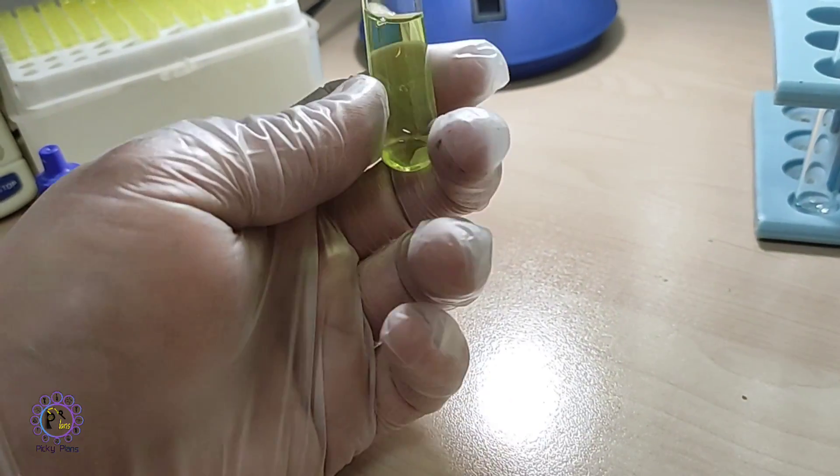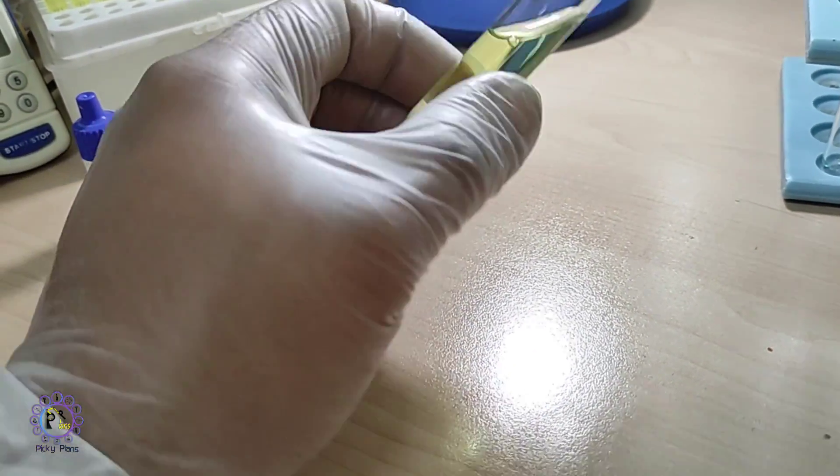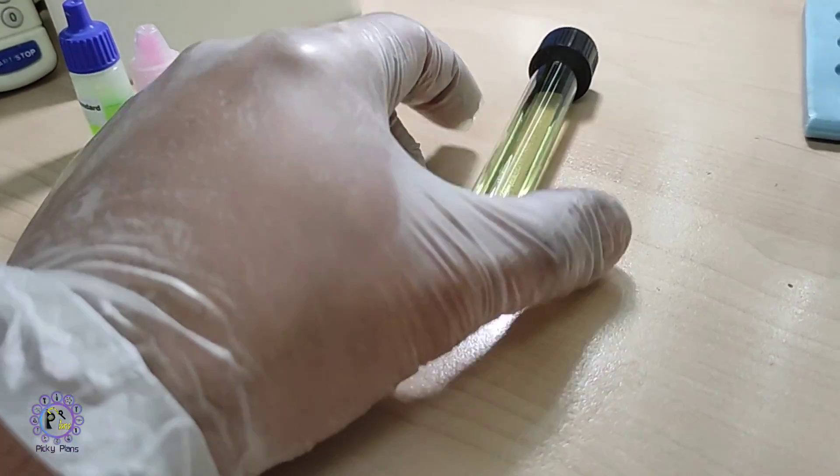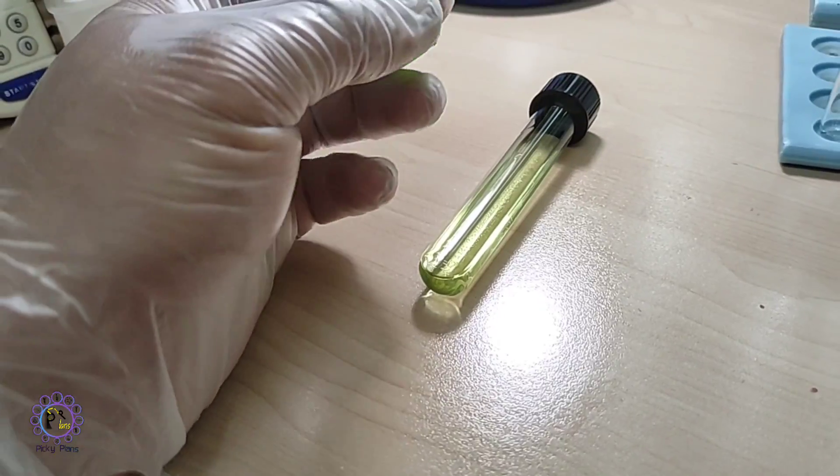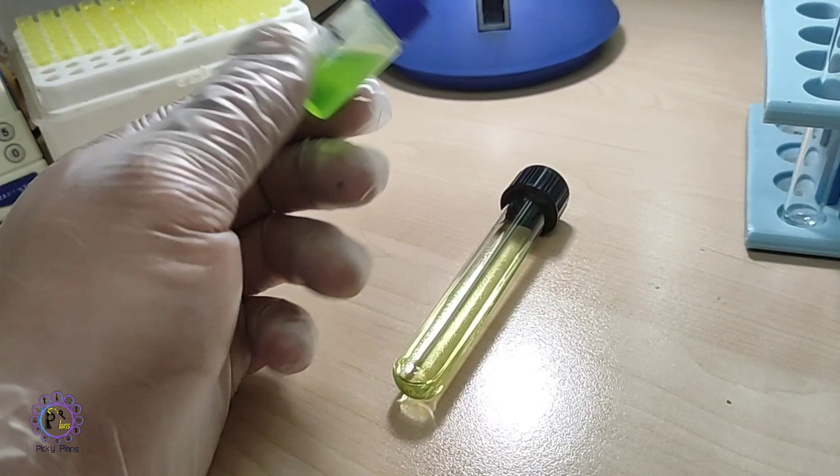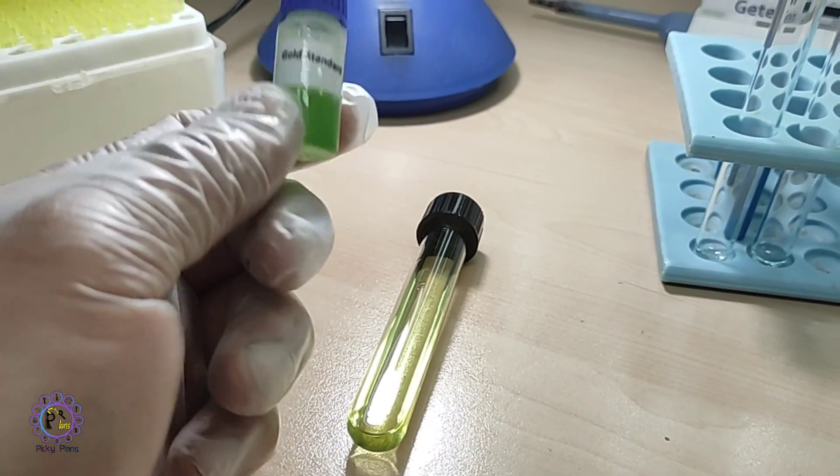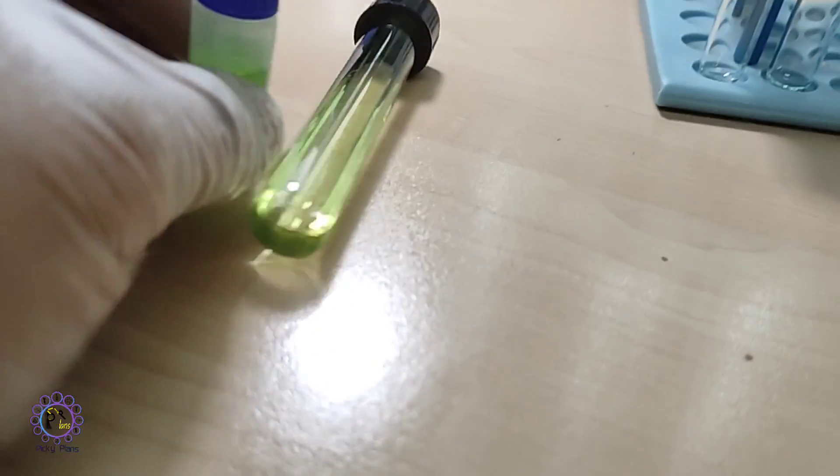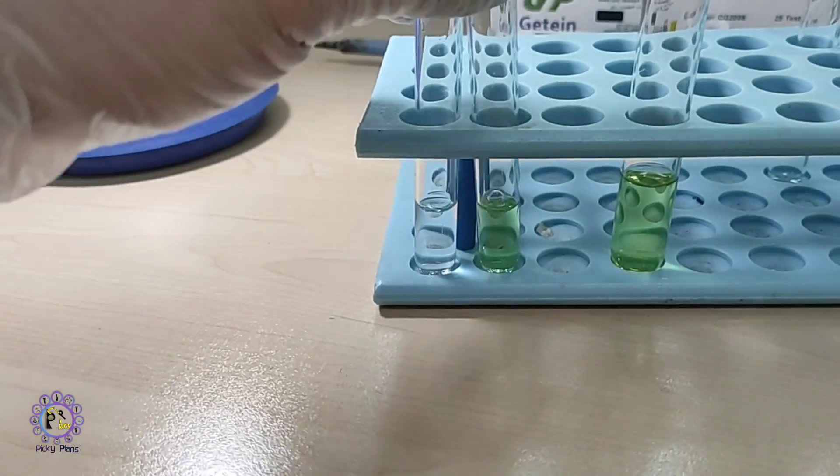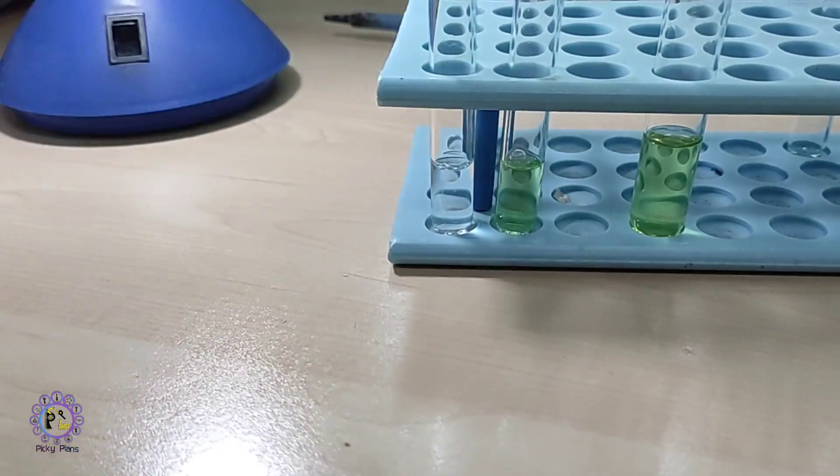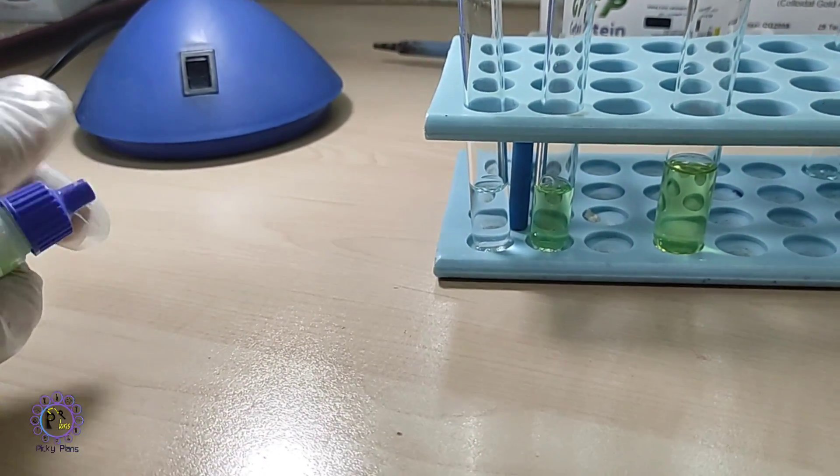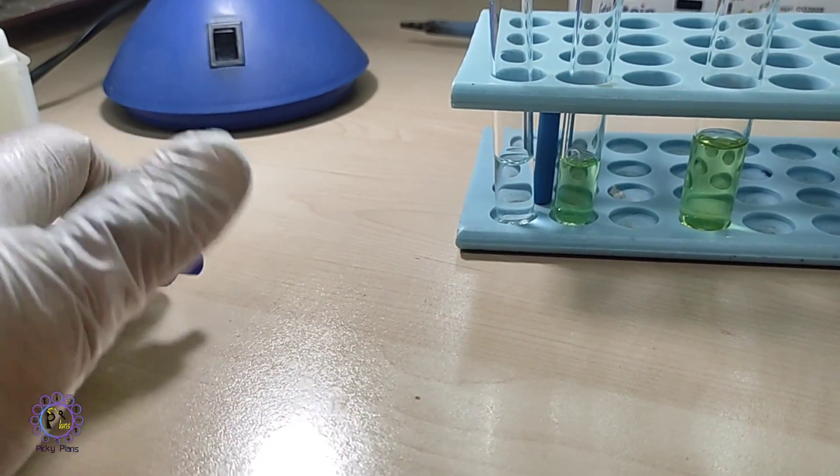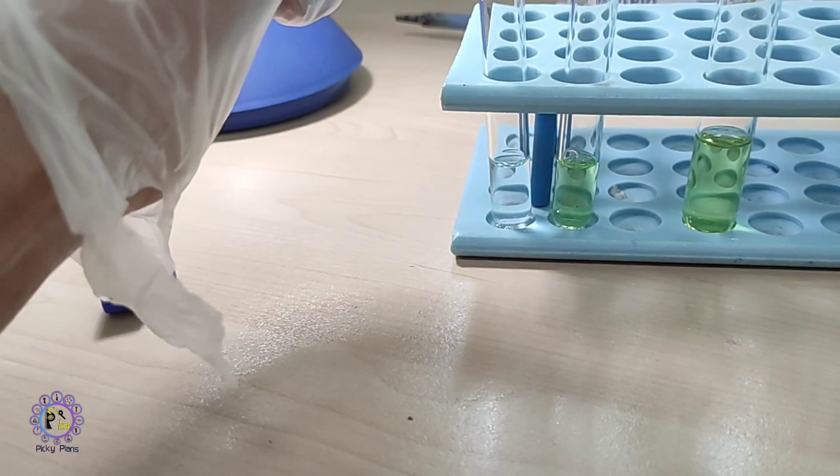This is a test sample I collected from the main batch that's expected to have gold inside. This solution is a standard that does contain gold. This is our test sample and this is some distilled water. I add some drops of gold standard to this one.